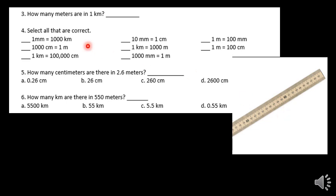So in this case, how many meters are there in 1 kilometer? Again, 1,000 — that would be our answer. So we get 1,000 for this one: 1,000 meters in a kilometer.